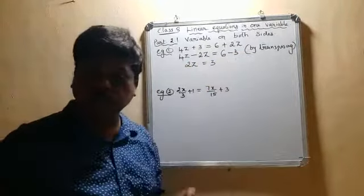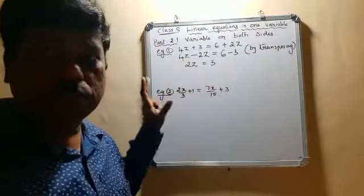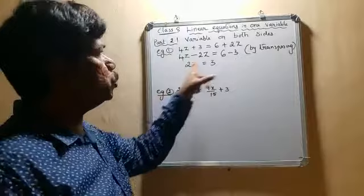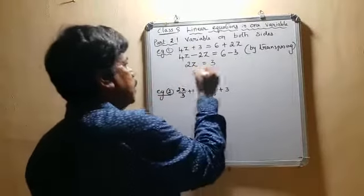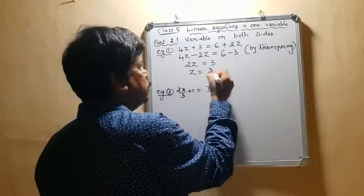Now, we are still short of the answer. Here, I want only z to be found out. So take this 2 to the other side. By transposing, we get z equals 3 divided by 2.